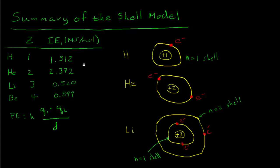For hydrogen, that number is 1.312 megajoules per mole. The other piece of information we need for thinking about the shell model has to do with the forces of attraction between charged particles, governed by Coulomb's Law — sometimes called Coulombic attraction or electrostatic attraction, because it's the force between charged particles when they're stationary. The 'electro' part refers to charges and 'static' because they're stationary.